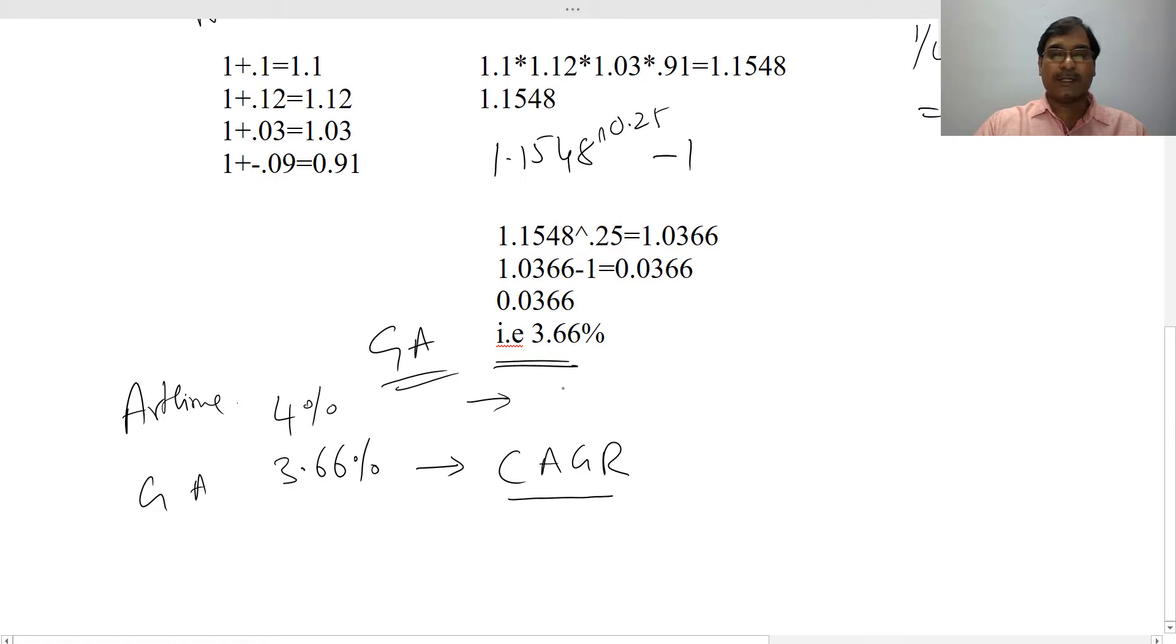Arithmetic average is mostly used on units, whereas geometric average is used in percentage returns. These are the differences between arithmetic average and geometric average.